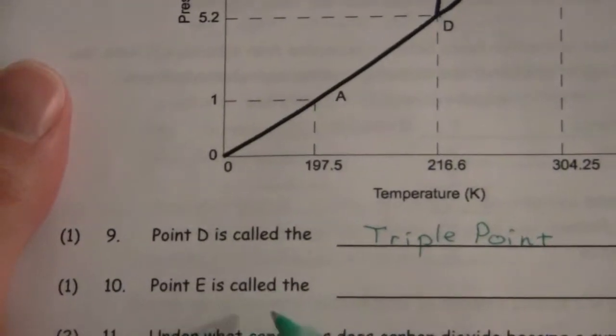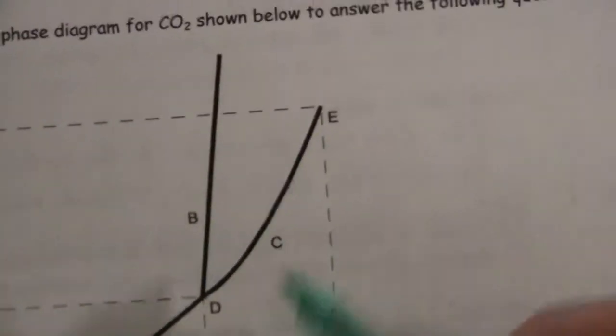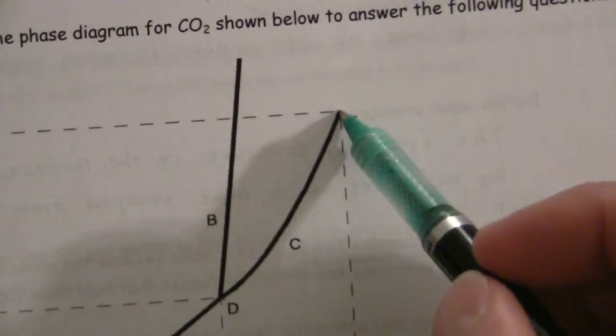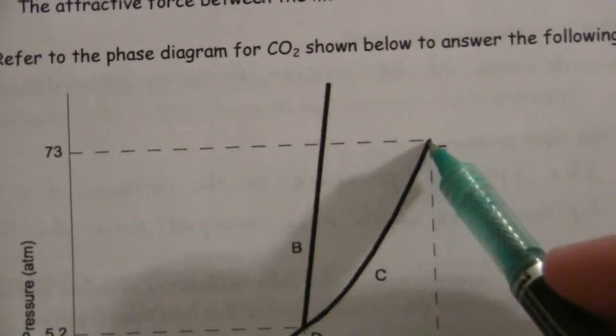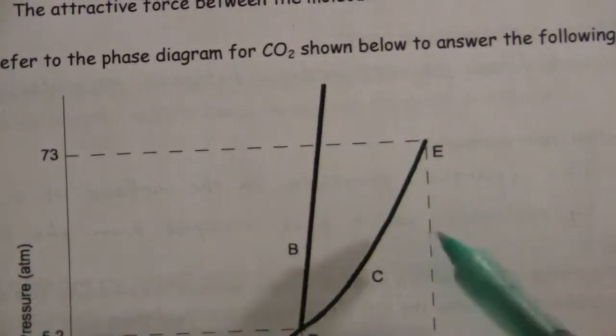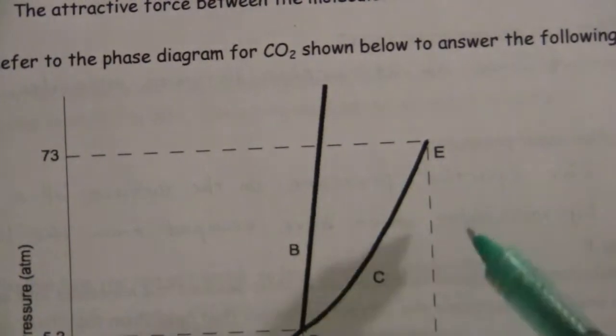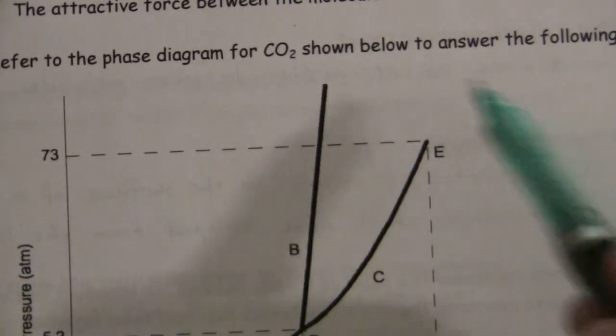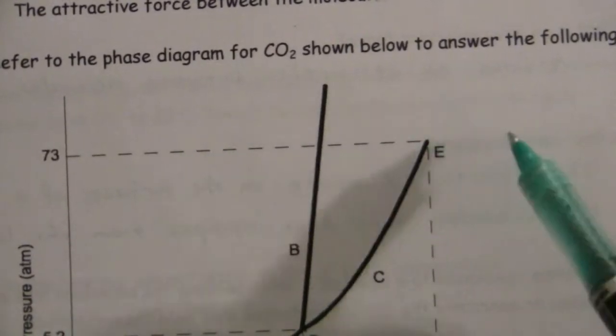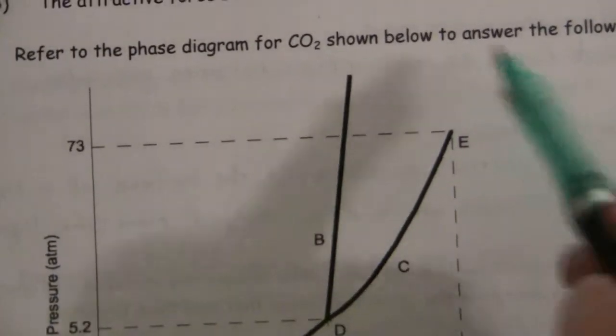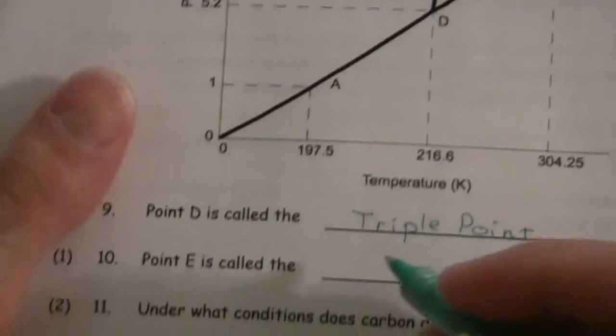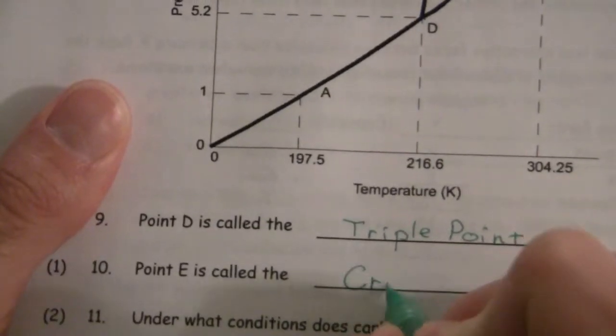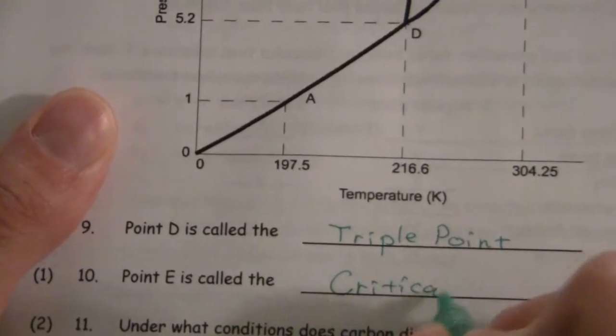And point E is called the critical point. A supercritical fluid is above the critical point. That's the point where that line between liquid and vapor disappears, and you just have an even transition in that supercritical region. So that is the critical point.